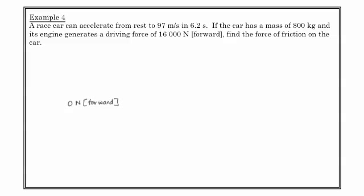A race car can accelerate from rest to 97 meters per second in 6.2 seconds. If the car has a mass of 800 kilograms, and its engine generates a driving force of 16,000 Newtons forward, find the force of friction on the car. All right, so here's what we have. V1 is equal to 0. It goes from 0 to rest. Sorry, from rest to 97 meters per second.